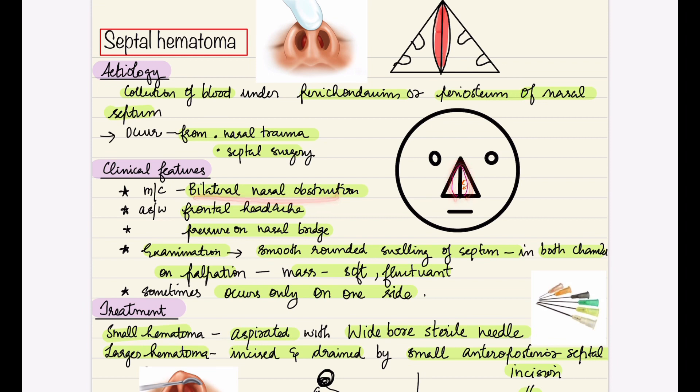This is associated with frontal headache and exerts pressure on the nasal bridge. On examination, we can find smooth rounded swelling of the nasal septum in both chambers, which is soft and fluctuant. Sometimes it occurs only on one side.